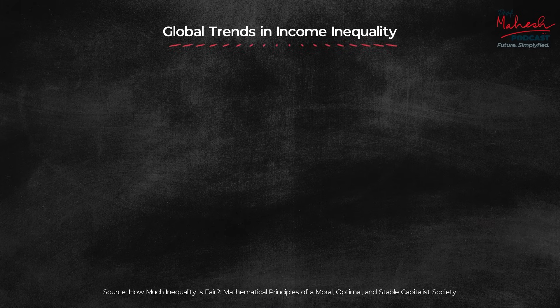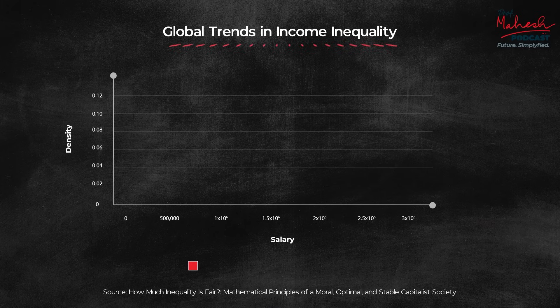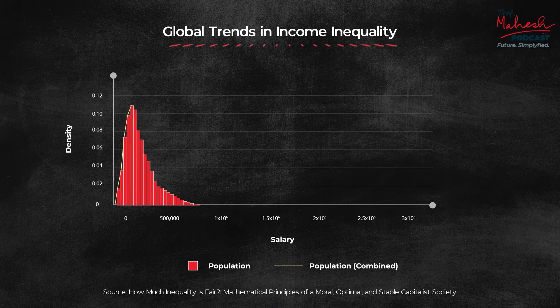It turns out it leads to a log-normal distribution of income in an ideal free market society. In actual societies, we observe that the bottom 97% follow log-normal, but the top 3% follow something called a power law. Our theory explains why that happens also — that's the gist of the whole thing.